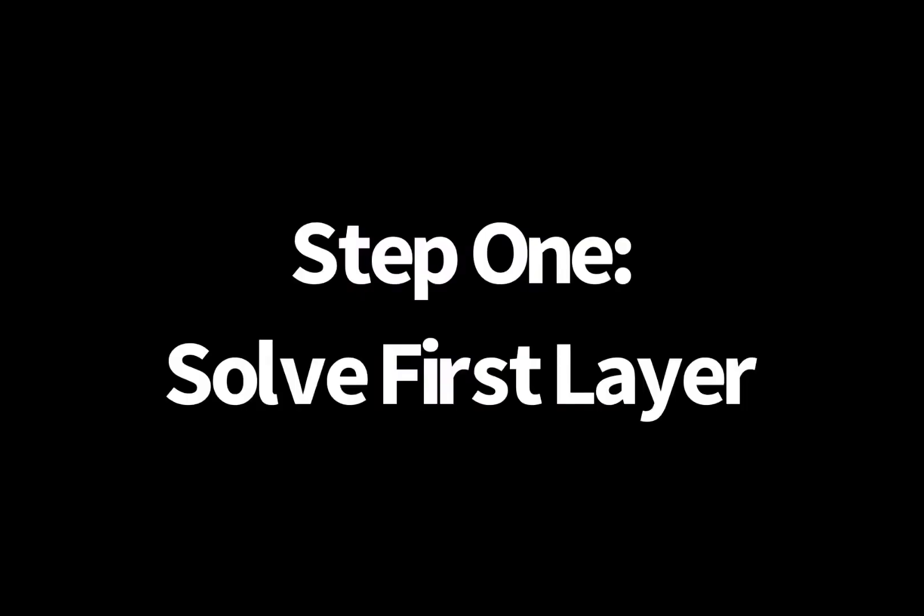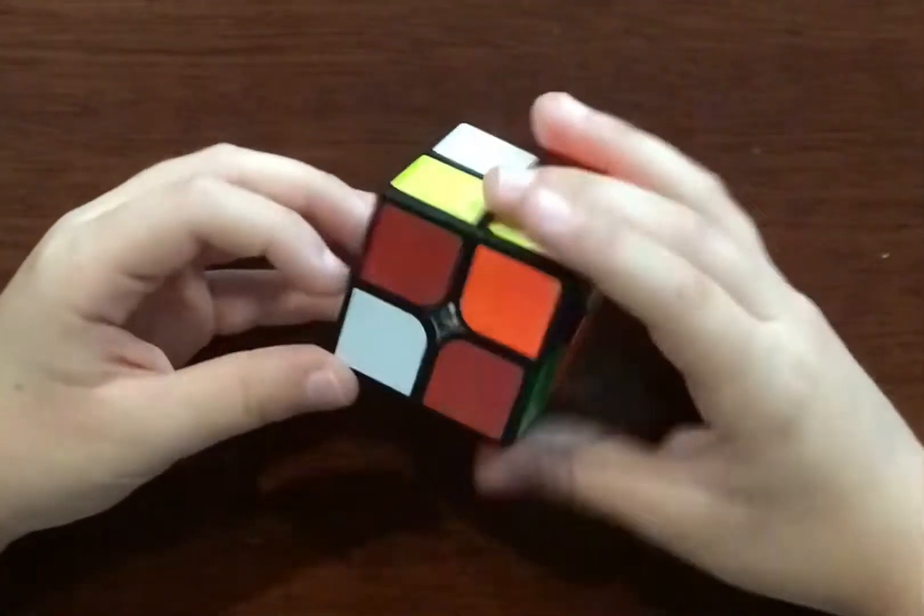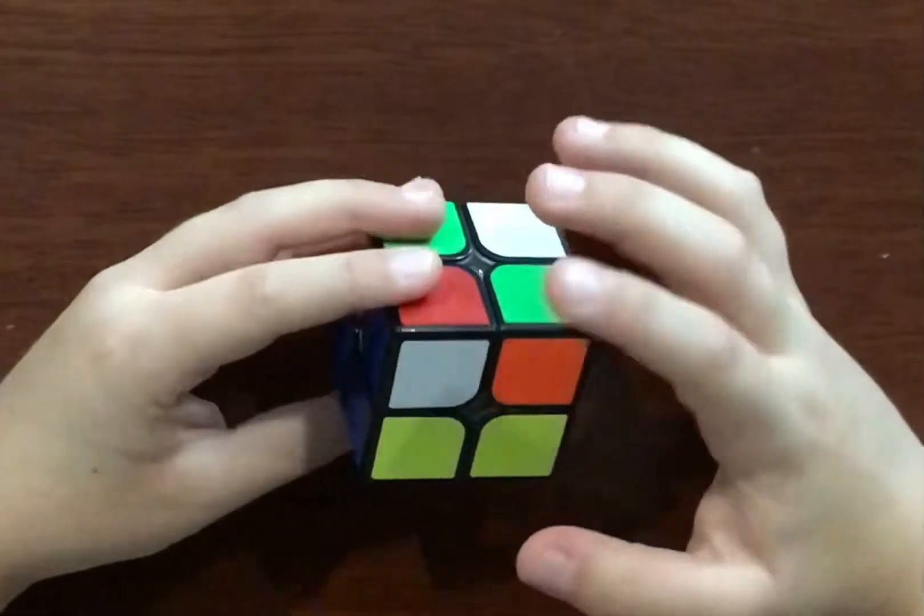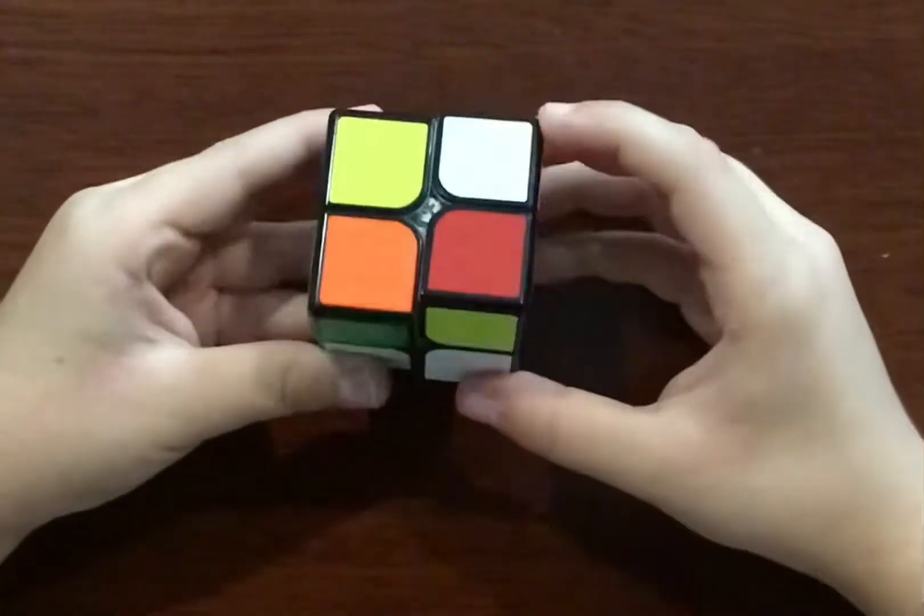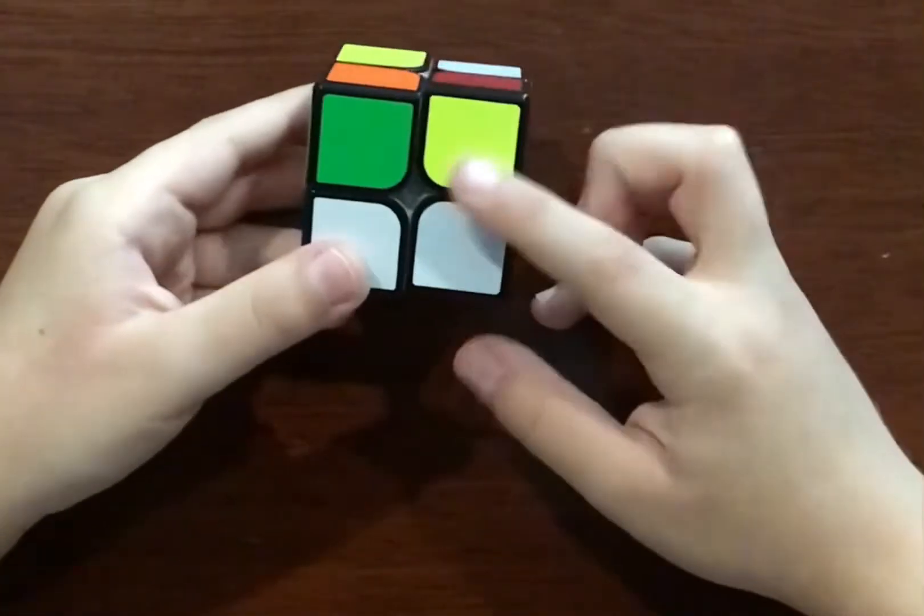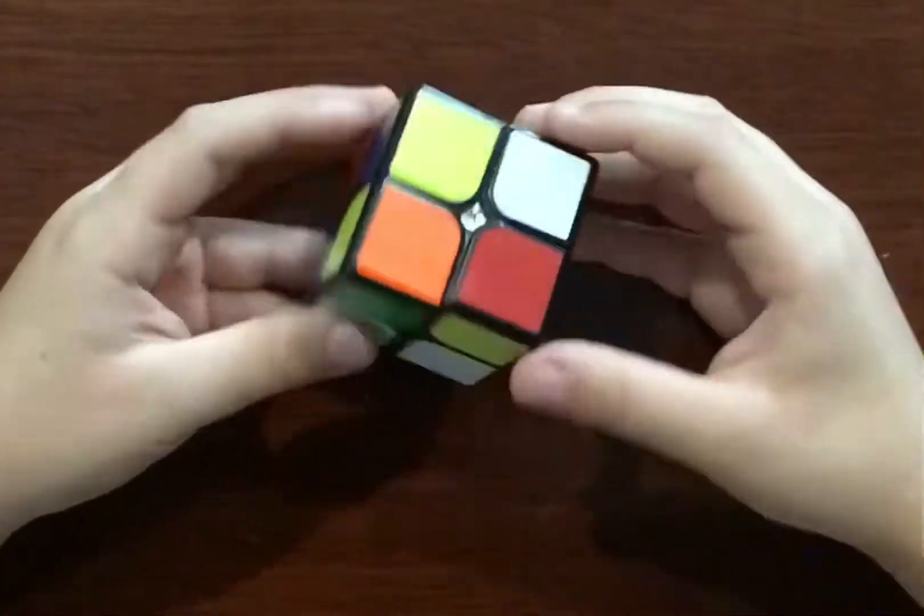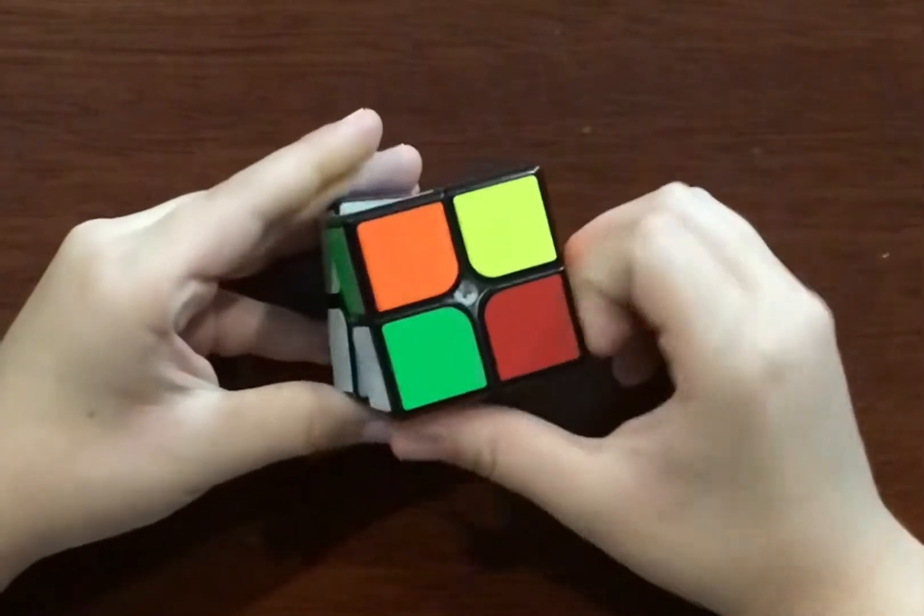First you need to solve the white side. That's easy. You take one piece, connect it with the other piece, see? And you keep looking for white pieces.